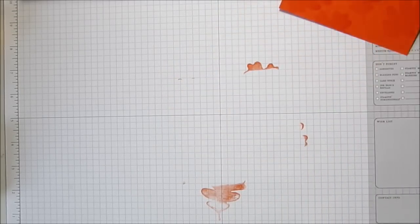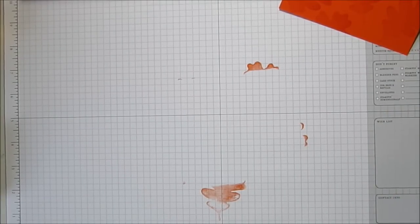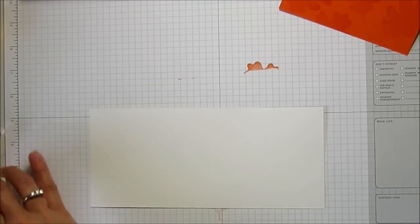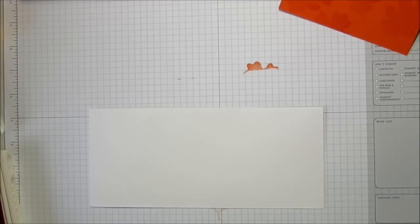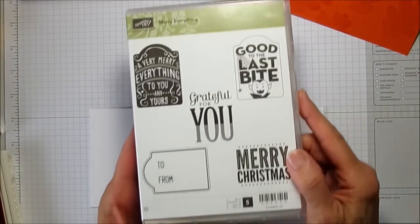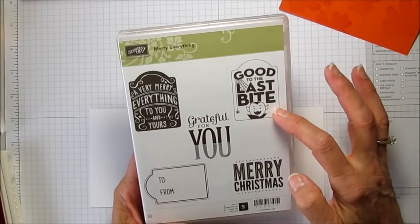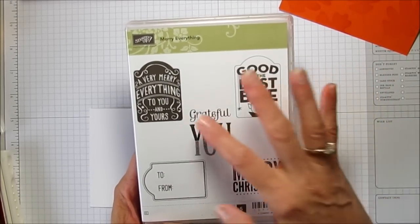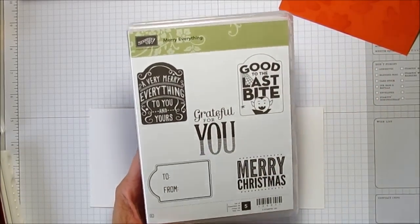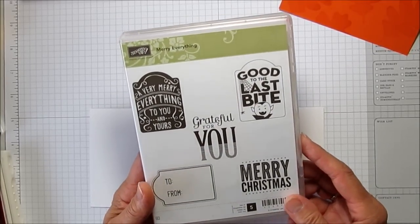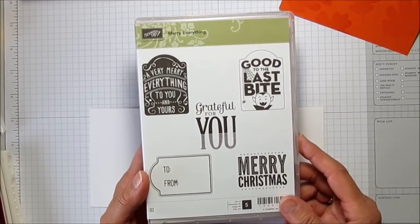That's done. I'm going to set that aside for a minute and grab my piece of Whisper White. I'm going to stamp the sentiment and the sentiment is from the Merry Everything set. This is so cute because it's got Halloween, Thanksgiving, Christmas, and then just a regular to and from you can use for anything.